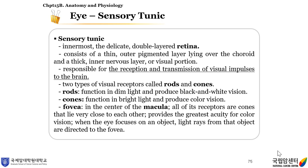The sensory tunic is the innermost, delicate double-layered retina. It consists of a thin outer pigmented layer lying over the choroid and the thick inner nervous layer, or visual portion. It is responsible for the reception and transmission of visual impulses to the brain. There are two types of visual receptors called rods and cones. Rods function in dim light and produce black and white vision. Cones function in bright light and produce color vision. In the center of the macula is the fovea, where all receptors are cones that lie very close to each other, providing the greatest acuity for color vision. When the eye focuses on an object, light rays are directed to the fovea.